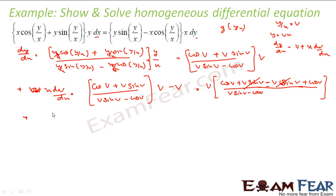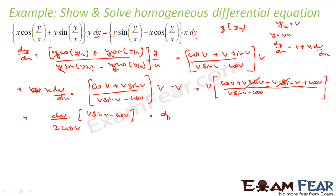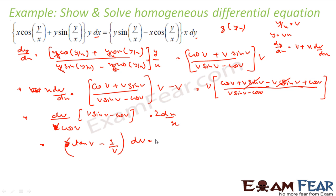So if you solve this, x·dv/dx becomes 2·cos v and here you get v·sin v minus cos v. And this is equal to dx by x. I can take this 2 here also. You solve this further: v·sin v / cos v is nothing but v·tan v, and cos v / cos v is 1. Actually there is a v here, so this becomes tan v minus 1/v. Please note there is a v here. dv is equal to 2·dx by x.